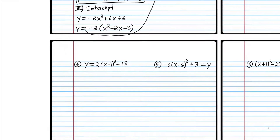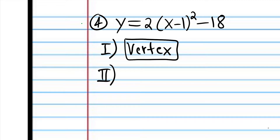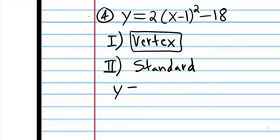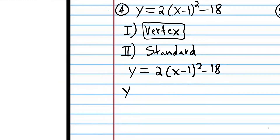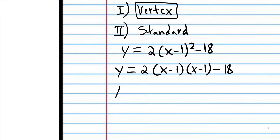We're back. Step one is to identify the form — vertex form. Step two, we're going to convert to standard form by expanding the power expression. So x minus 1 times x minus 1 — that's what raising to the second power means, you're multiplying something by itself. Using FOIL: x times x is x squared, x times negative 1 is negative x, negative 1 times x is negative x, negative 1 times negative 1 is positive 1.